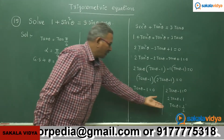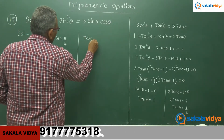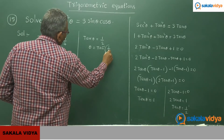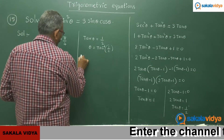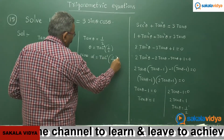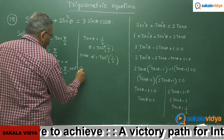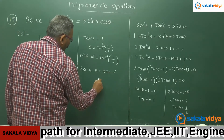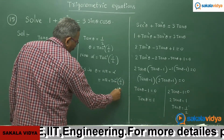For the second case, tan theta equals to 1 by 2. This means theta equals to tan inverse of 1 by 2, which is treated as the principal value. So alpha equals to tan inverse 1 by 2, and the general solution is theta equals to n pi plus tan inverse (1 by 2), where n belongs to Z.